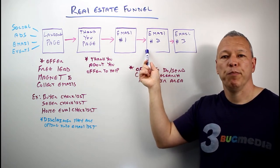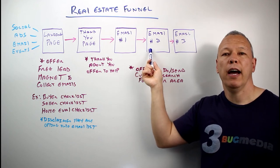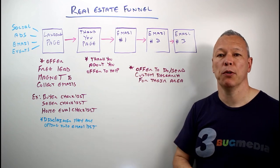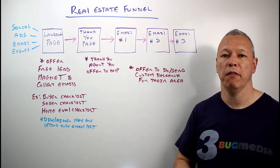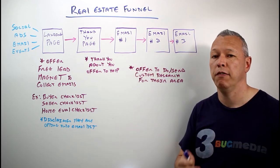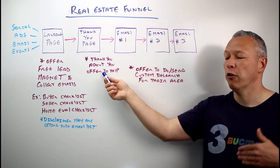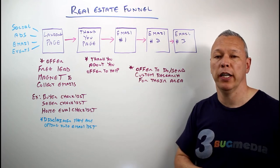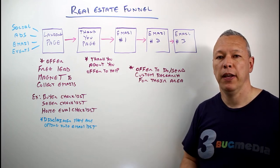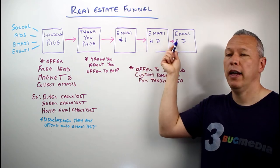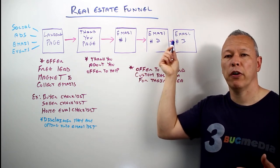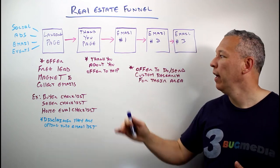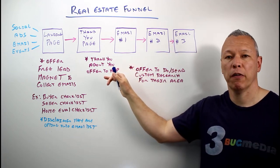Then you're going to wait two or three days and send out another email to them. Same thing — do a follow-up, ask them how things are going with the checklist, if they have any questions, feel free to contact me. Also reiterate your offer to do some custom help for them, whether that's buying or selling a home — you can do the legwork for them. Then email number three, and whatever you want to add on there, is kind of the same thing. You want to add some value, check in, and reiterate your offer to them.